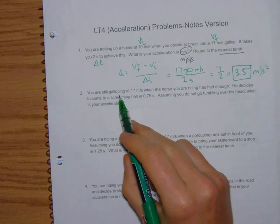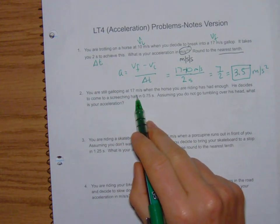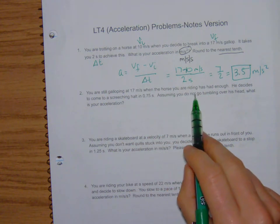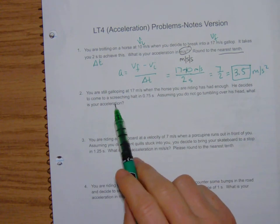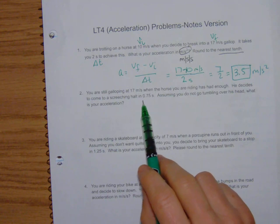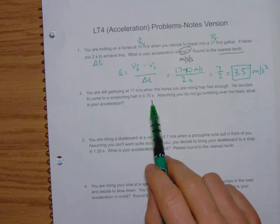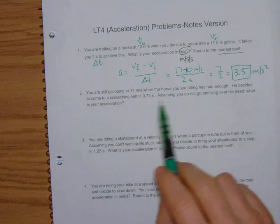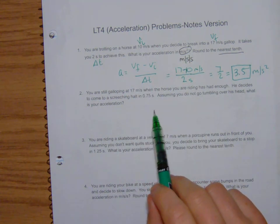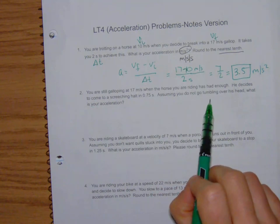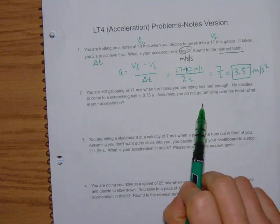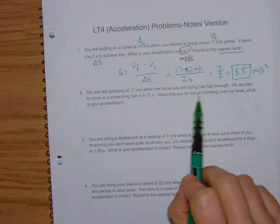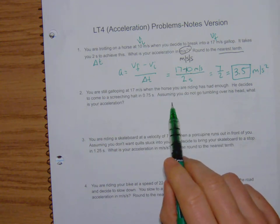Now for number 2, you're galloping at 17. So end of this problem I'm not very creative. The horse you are riding has had enough. He decides to come to a screeching halt in 0.75 seconds. That's pretty quick. So assuming you do not go tumbling over his head, what is your acceleration? If you've ridden horses much you know exactly what happens here and you know how this feels. You may have went tumbling over his head. But we're going to pretend that you are one heck of a rider and you stayed on.